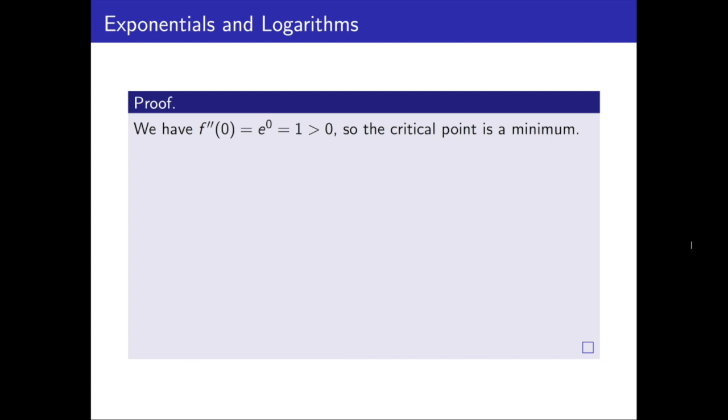Now if the critical point is a minimum, and that minimum is at a value of 0, then that means f of x has to always be positive. So e to the power x is bigger than x for all x greater than 0, as well as the previously determined x less than or equal to 0.